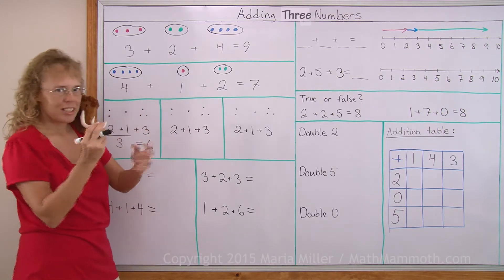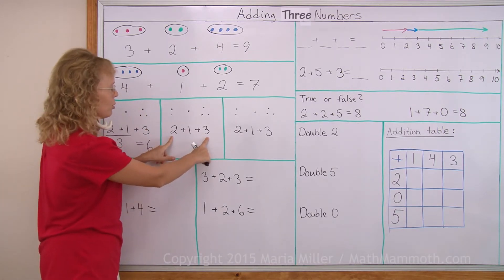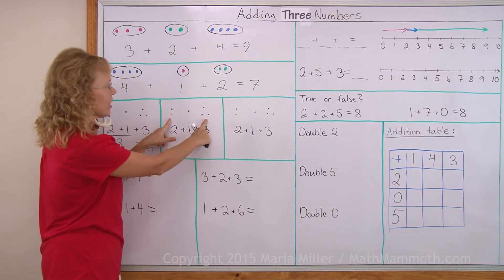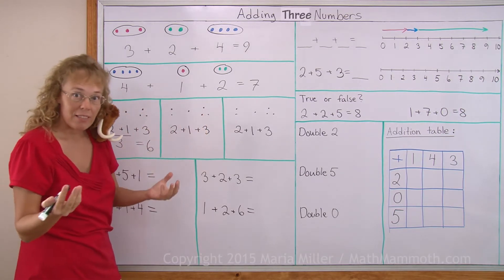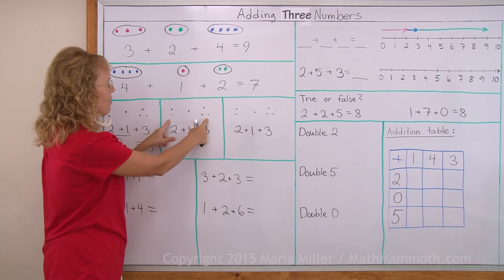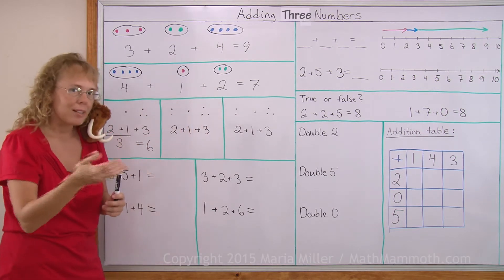Let's say that I find some other way to add. I add this and this first. Two and three. How much is two and three? That's five. And then after I have five, I add one more. Five and one is six.